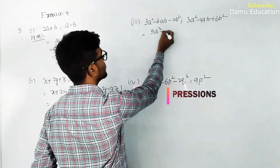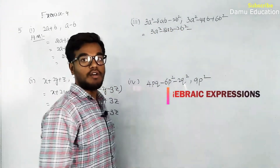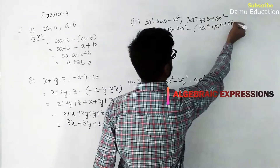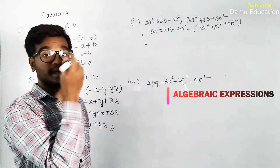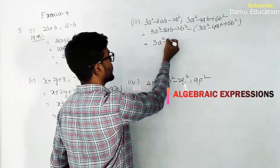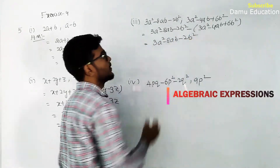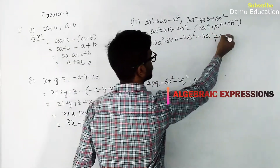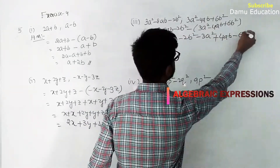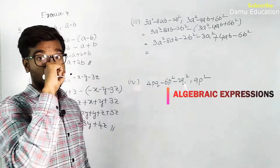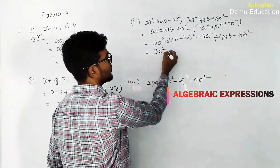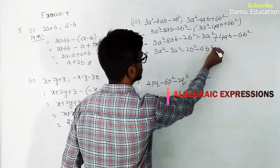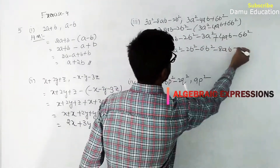Third question: 3a squared minus 8ab minus 2b squared, minus of (3a squared minus 4ab plus 6b squared). Write the first expression as it is: 3a squared minus 8ab minus 2b squared. Then applying the minus sign: minus 3a squared, plus 4ab, minus 6b squared. Write all like terms together.